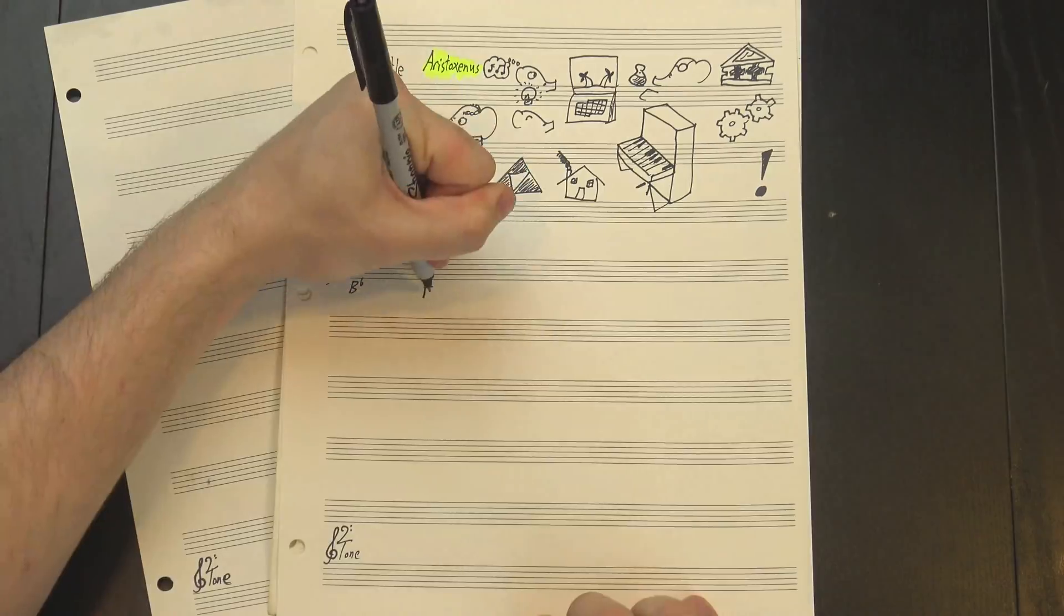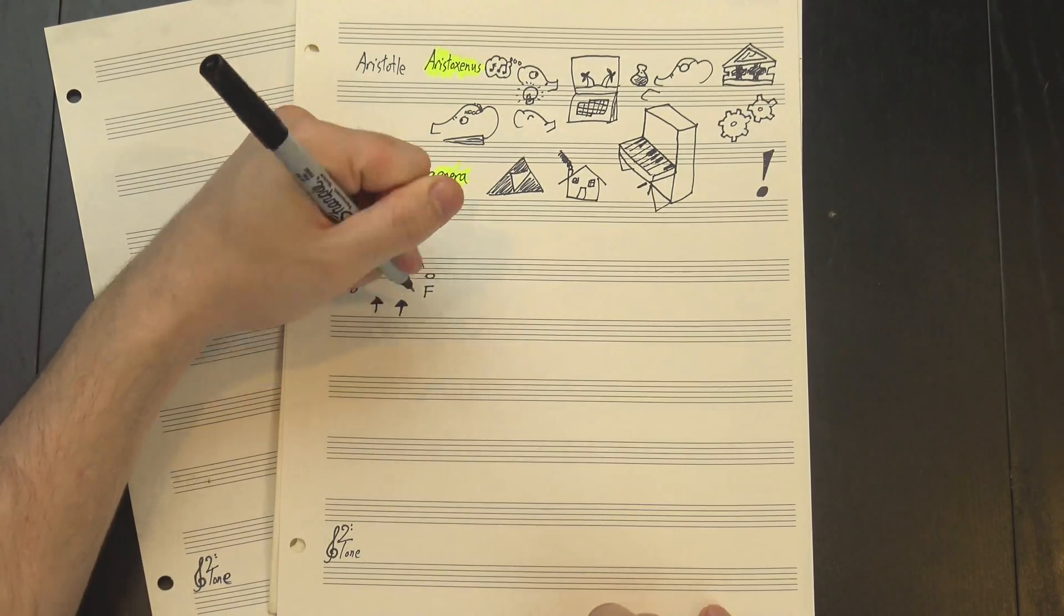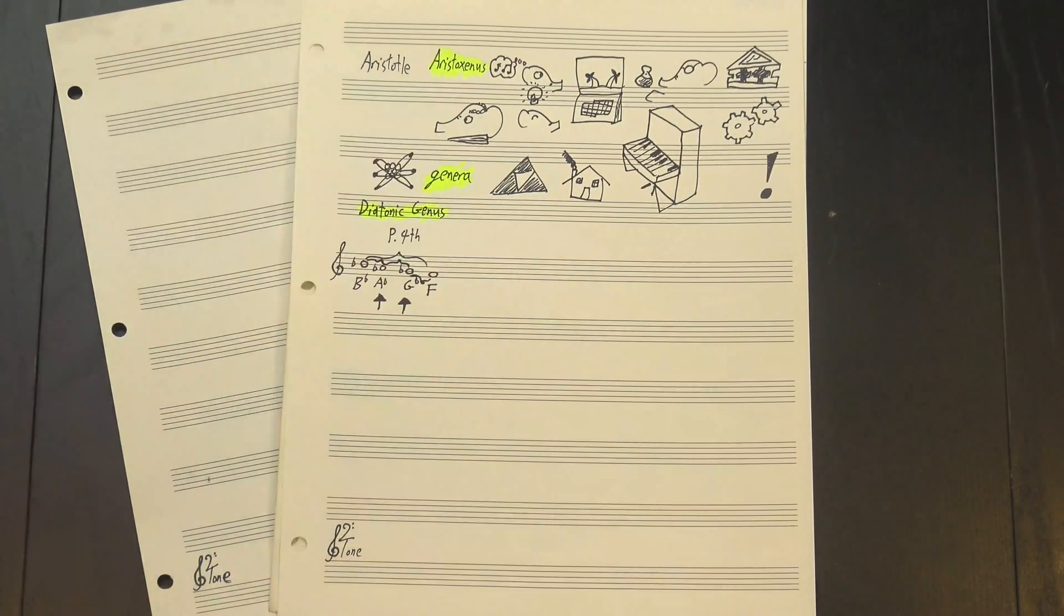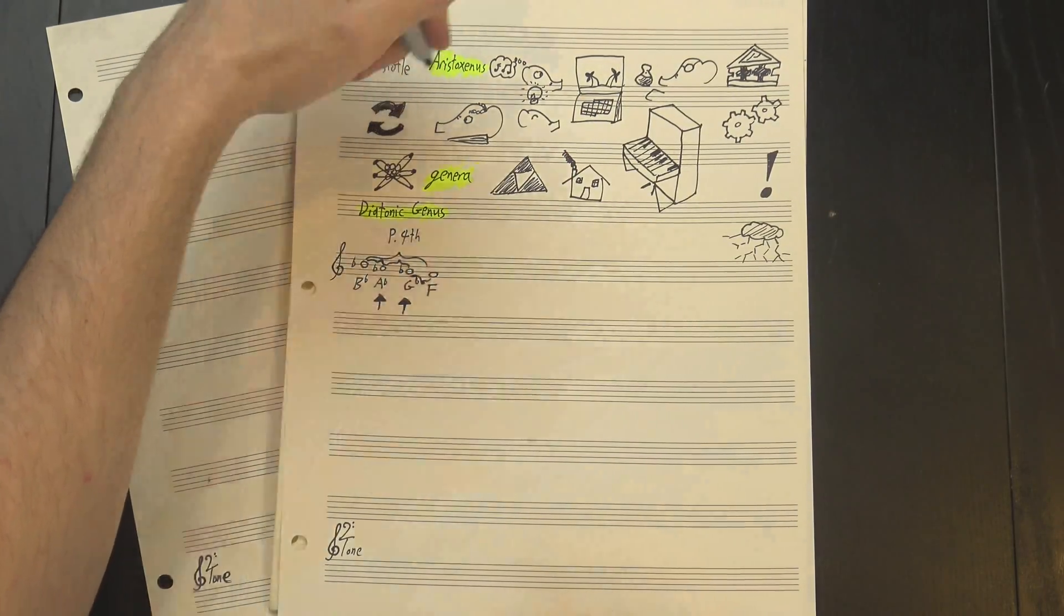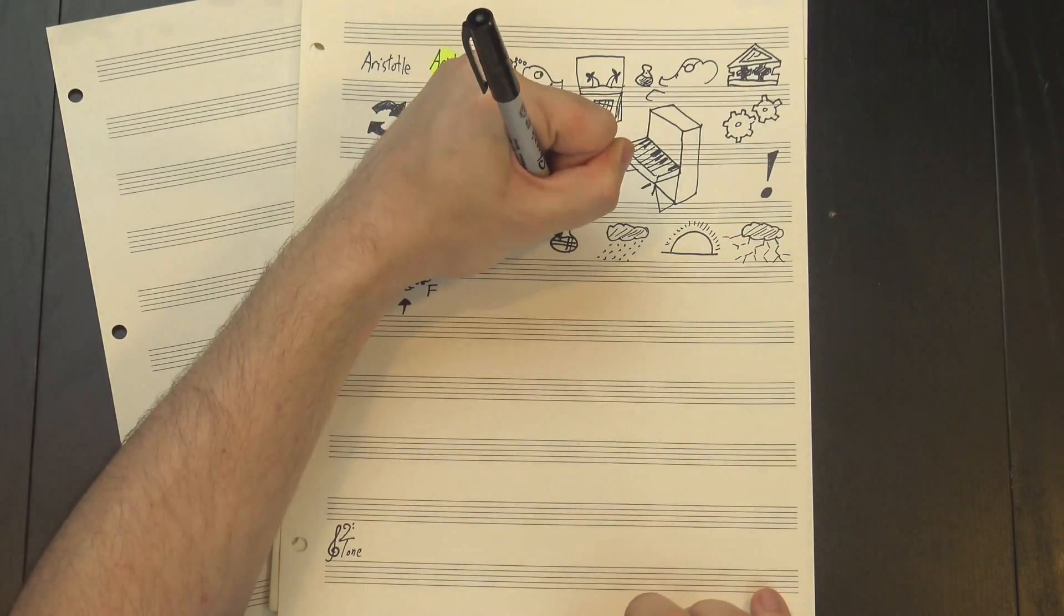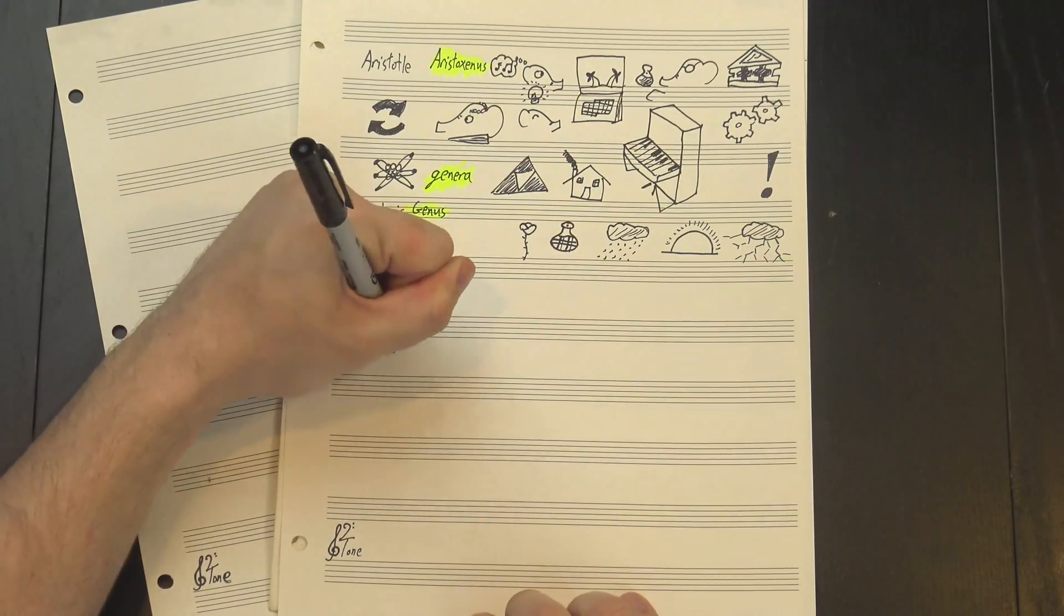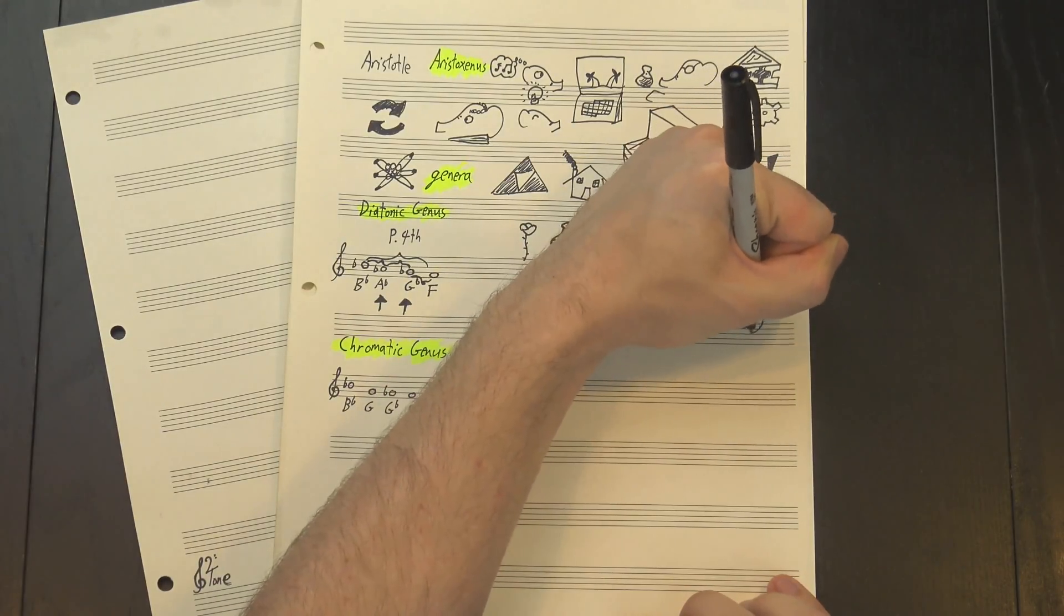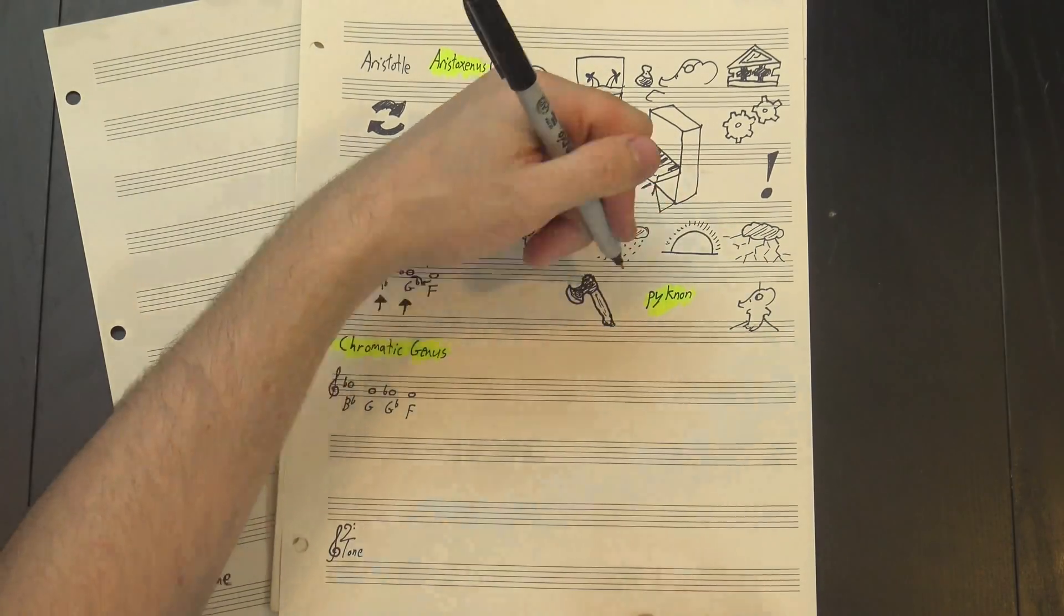In all three genera, the top and bottom notes are always a perfect fourth apart. The only thing that changed were the two notes in the middle. So in the diatonic genus, we have this, where the intervals are a half step and two whole steps. This resembles our Phrygian tetrachord from earlier, and by rotating the intervals around we can find the major and minor ones, too. In effect, they're all variations of the same basic pattern. We can also see that in the harmonic tetrachord, which is related to Aristoxinus' chromatic genus. Here, the tetrachord is dominated by a minor third that takes up more than half the space, and then the rest of it, called the piknon, is split into two half steps.